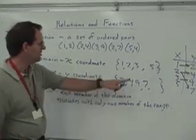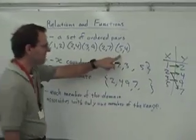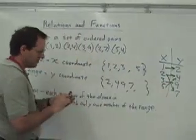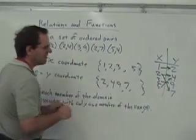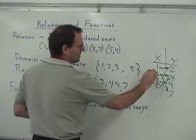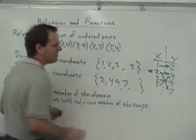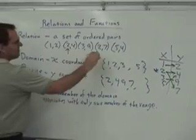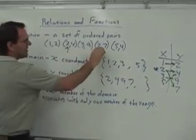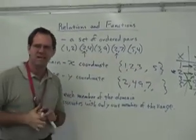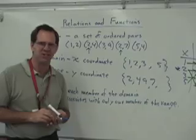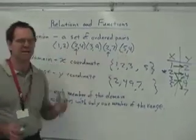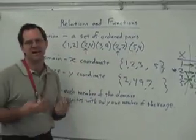The 5 here associates with the 4. Now the 2 appears twice — it appears once there and once there. Whenever the x-coordinate appears more than once, it's not a function. So this set of ordered pairs is actually not a function.